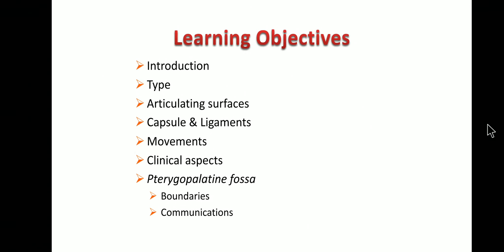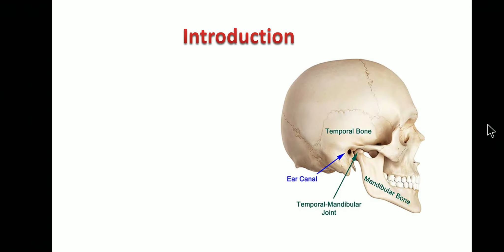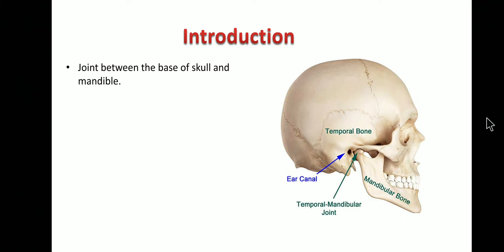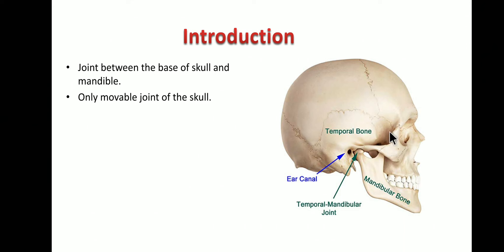The temporomandibular joint is a joint between the skull and the mandible, or lower jaw — it is the only movable joint with respect to the skull. These jaw movements are mainly responsible for mastication as well as speech. It is a synovial joint, lined by a synovial membrane with synovial fluid in the joint cavity.